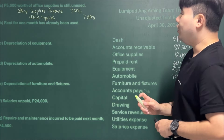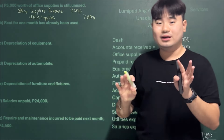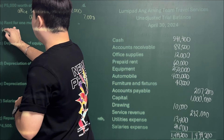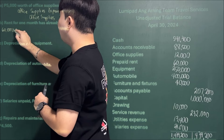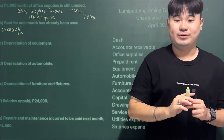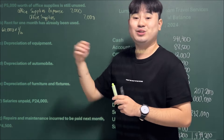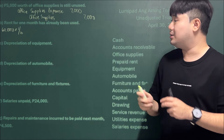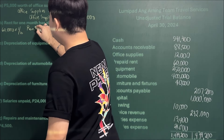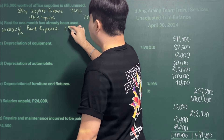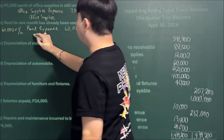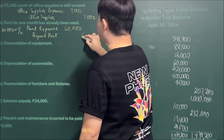Adjustment A: 5,000 worth of office supplies is still unused, meaning 7,000 was used (12,000 − 5,000). Entry: debit Office Supplies Expense 7,000, credit Office Supplies 7,000. Adjustment B: Rent for one month has been used. 60,000 ÷ 6 months = 10,000. Entry: debit Rent Expense 10,000, credit Prepaid Rent 10,000.